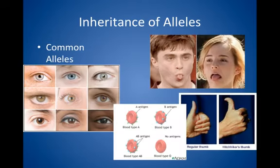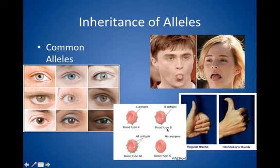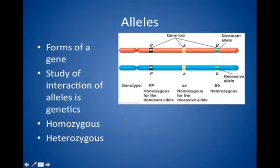Some common inherited alleles include eye color, which has many different alleles — that's called multiple alleles. Another example of multiple alleles is blood type: we have blood type A, blood type O, and blood type B. Those are three different blood types coded for by different alleles on chromosomes.